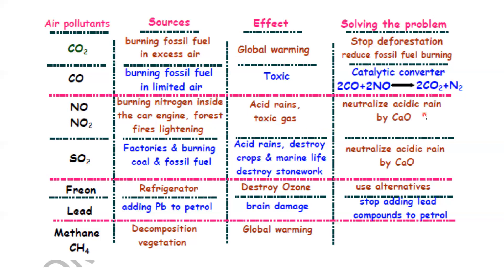We can neutralize nitrogen monoxide using a basic oxide such as calcium oxide, since nitrogen monoxide is an acidic oxide. Sulfur dioxide is produced by factories and burning fossil fuels. It can cause acid rain, destroy marine life, damage plants, crops, and stonework. Sulfur dioxide can also be neutralized by calcium oxide.